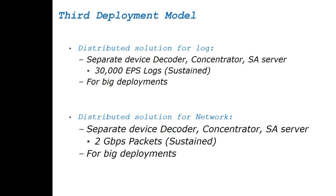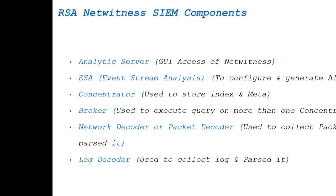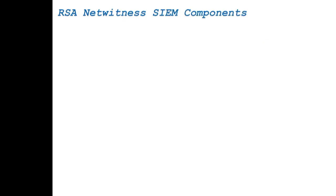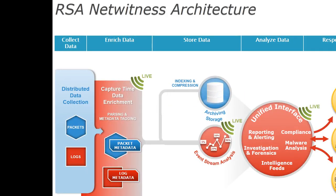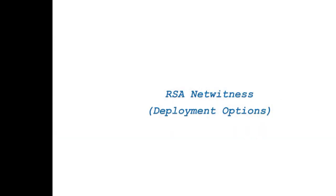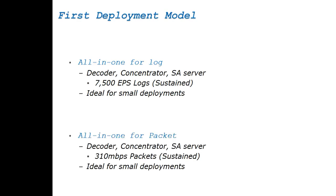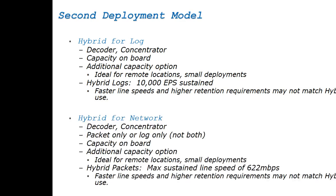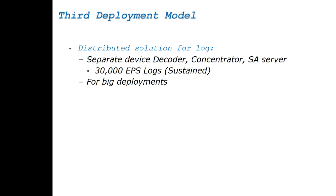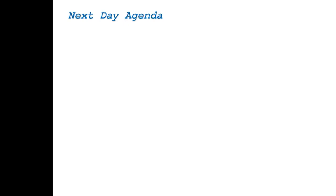To recap what we covered today: first, what is NetWitness server; second, SIEM components; third, the logical architecture of the RSA NetWitness SIEM solution; and fourth, the deployment model — including All-in-One appliance for log and packet, Hybrid appliance for log and network, and Complete Distributed solution for log and network.